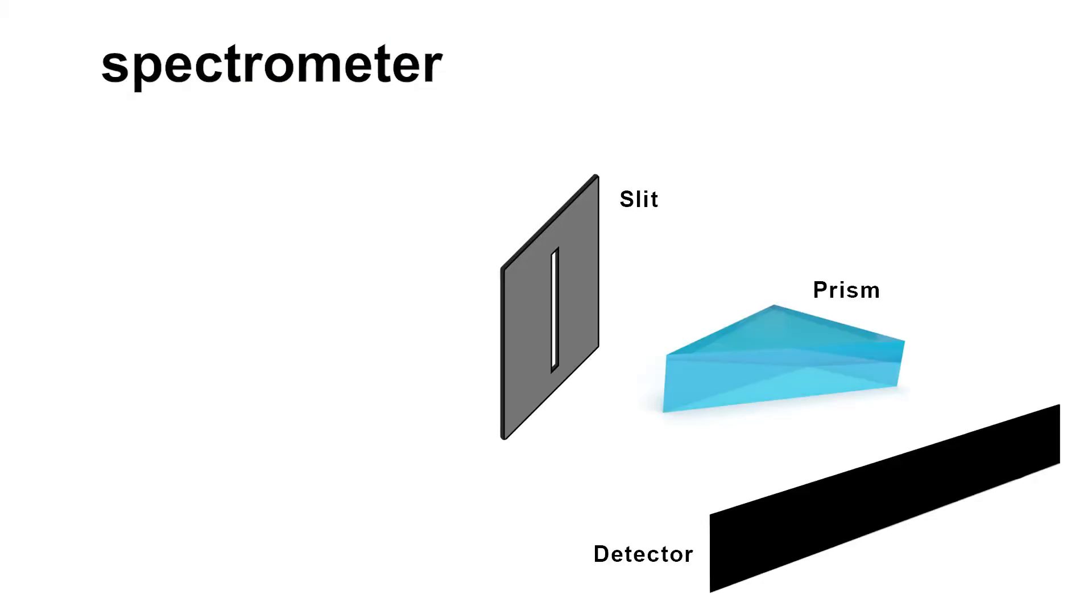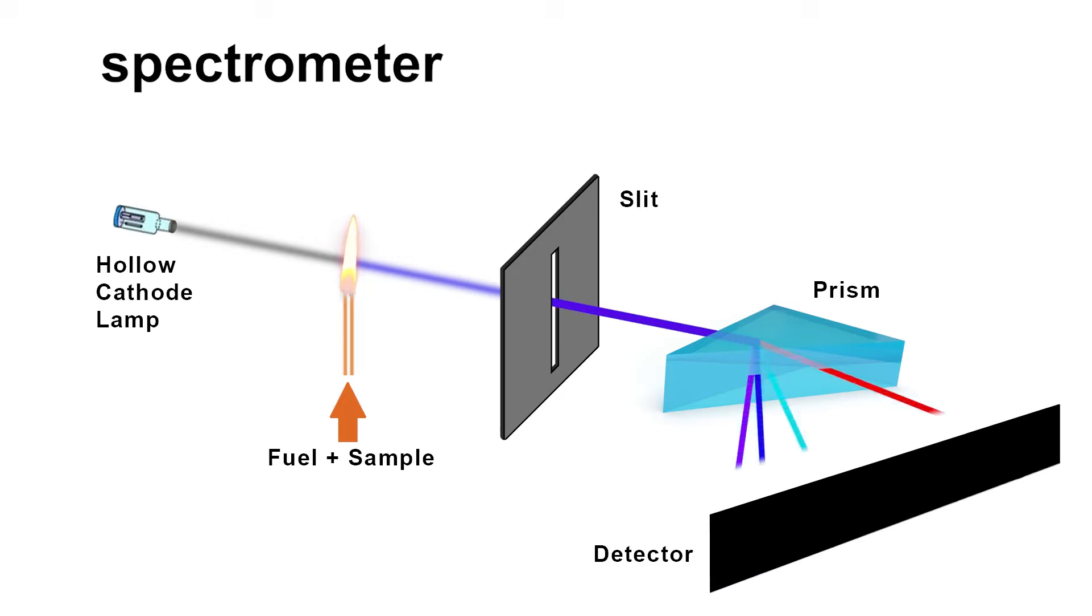A spectrometer adds fuel to your test sample and creates a flame that releases atoms of the sample. A special lamp directs these atoms through a slit to focus it and then divides the light into individual wavelengths that can be easily viewed.